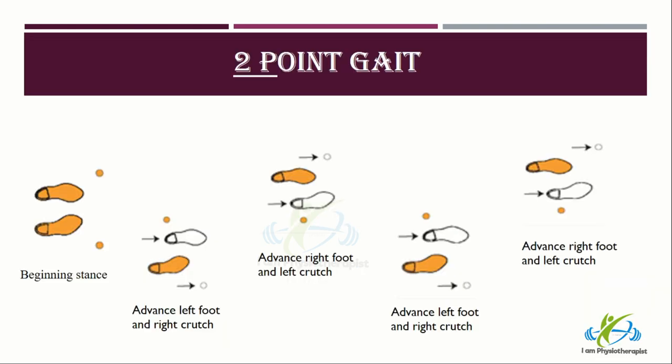Two-point gait pattern: the two-point gait pattern requires the use of bilateral assistive gait devices. This pattern is faster than the four-point gait. It is a gait in which the left foot and right crutch are advanced simultaneously, then the right foot and left crutch are moved forward.